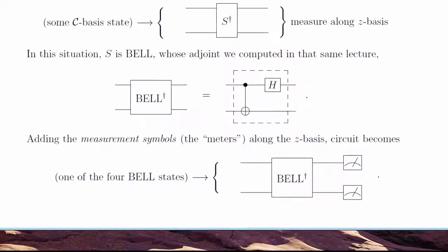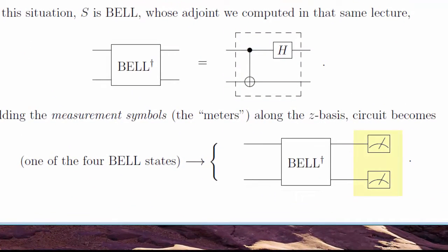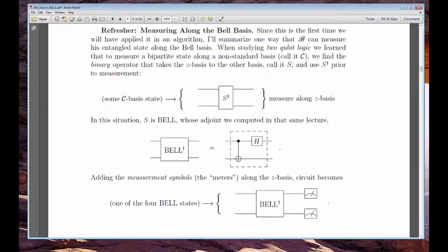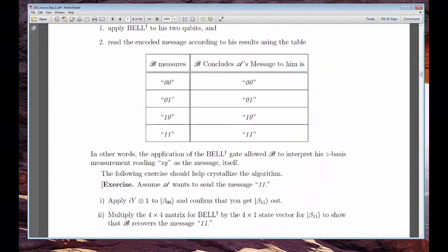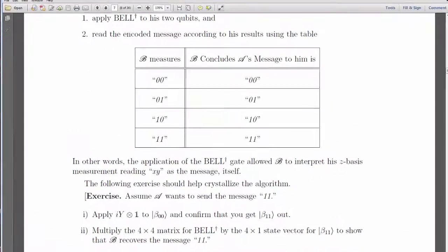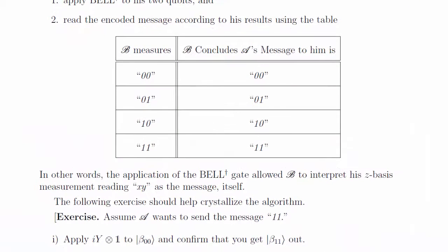At that point, Bob measures his bipartite state along the Bell basis. He'll get one of four values, since a measurement always forces a collapse to one of the basis states, and for H2, there are only four of those. As we'll learn in the chapter, the resulting measurement will reveal the message.